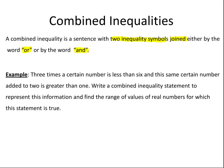We're going to do an example of a combined inequality. A combined inequality is a sentence that has two inequality symbols joined either by the word 'or' or by the word 'and'. Our example: three times a certain number is less than six, and this same certain number added to two is greater than one. We are asked to write a combined inequality statement and find the range of values of real numbers for which the statement is true.